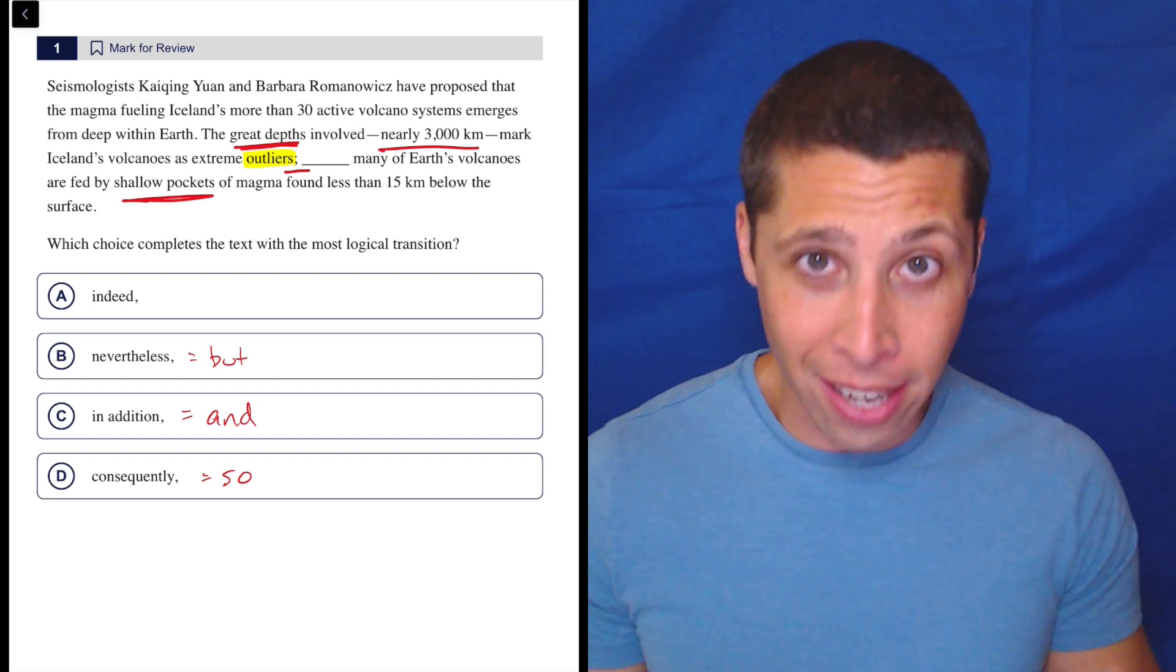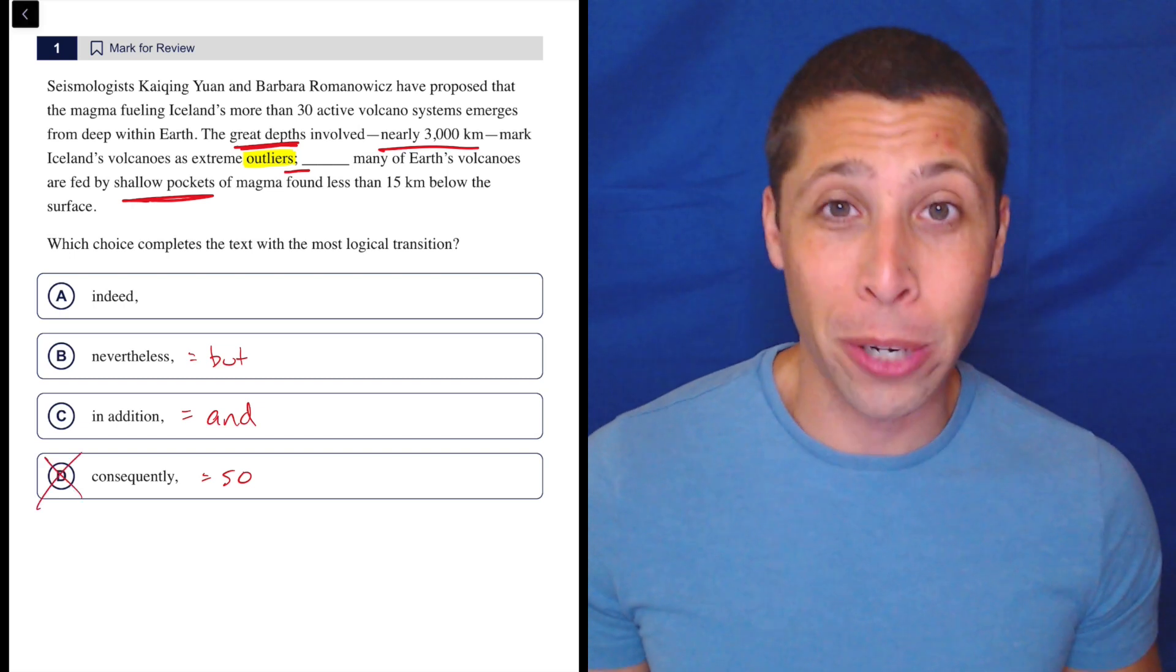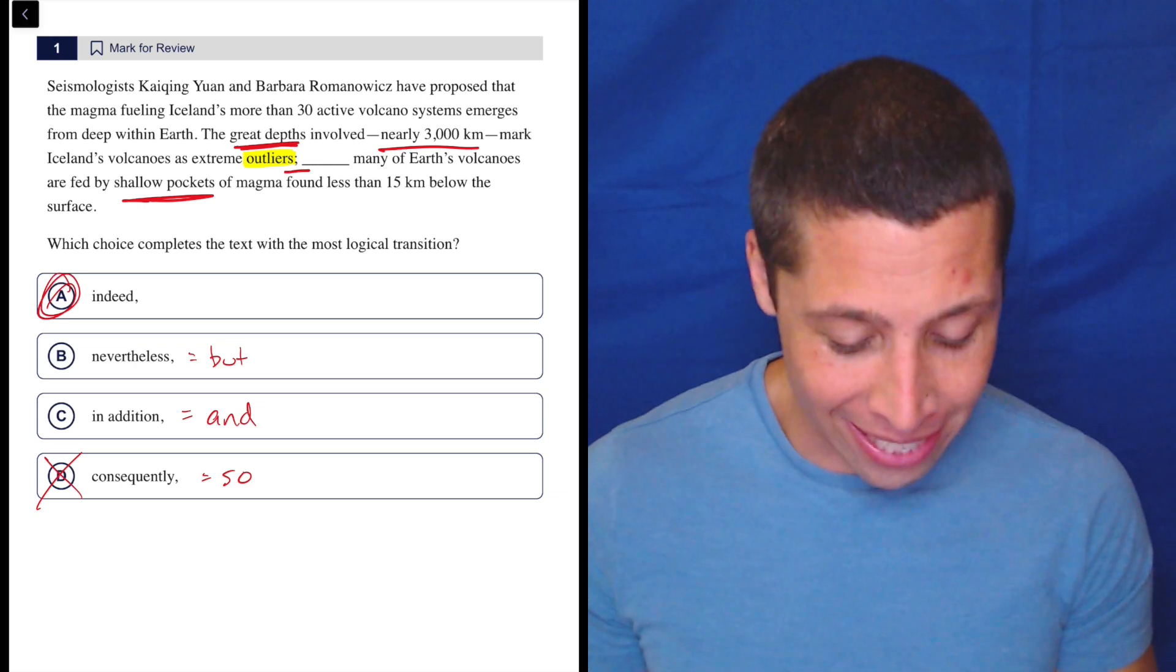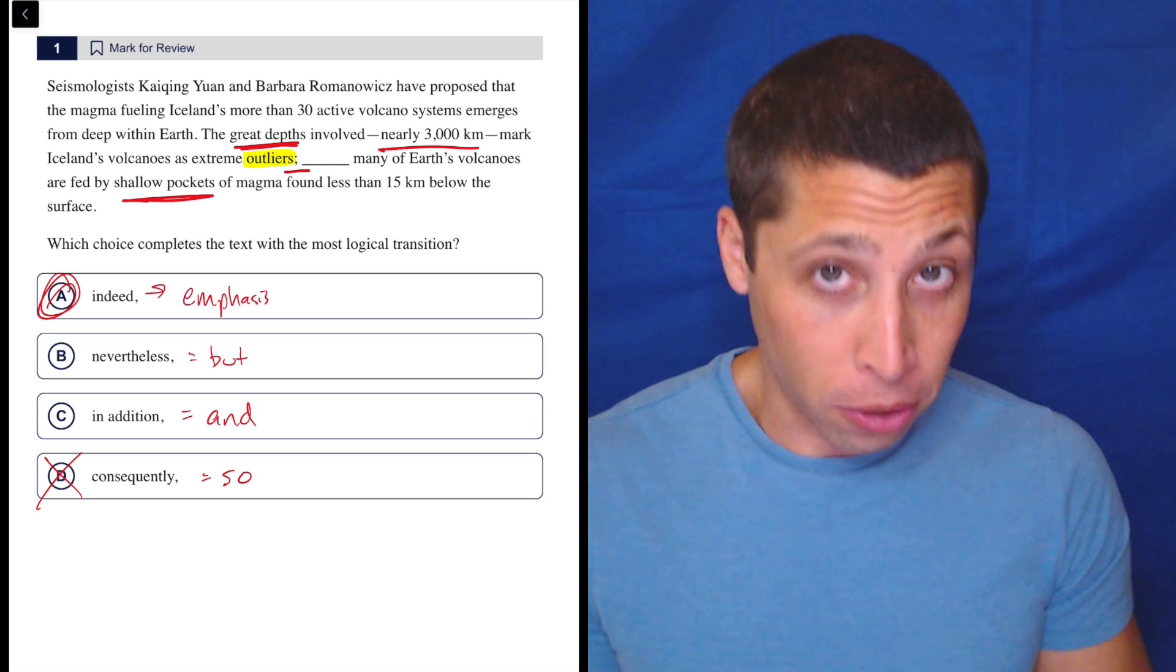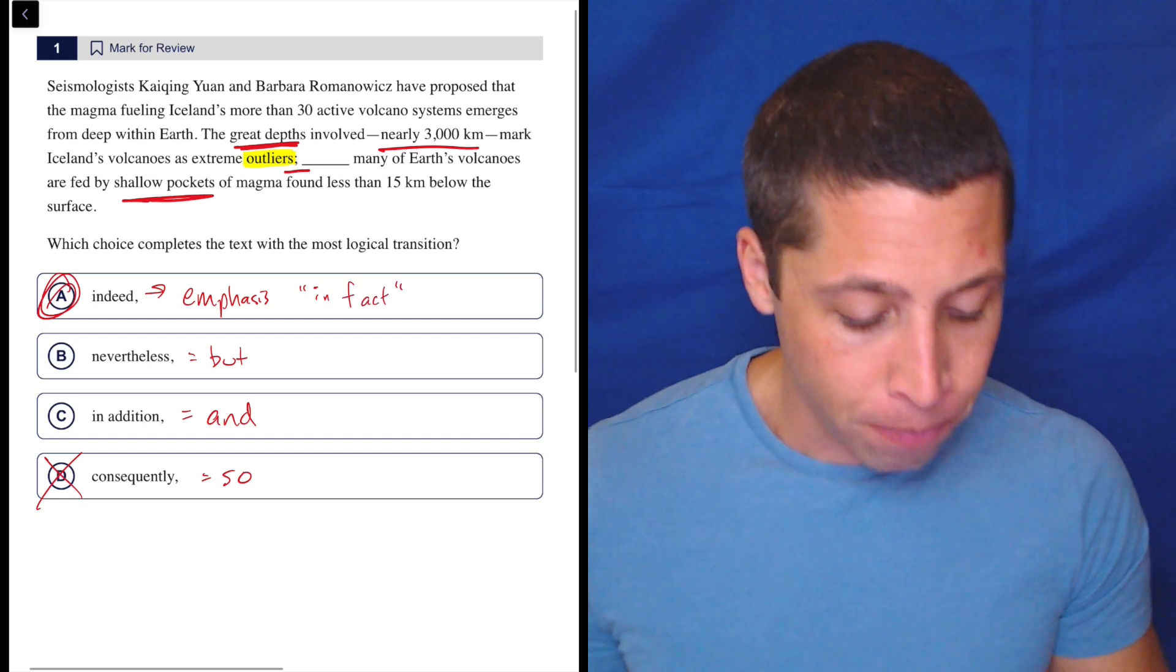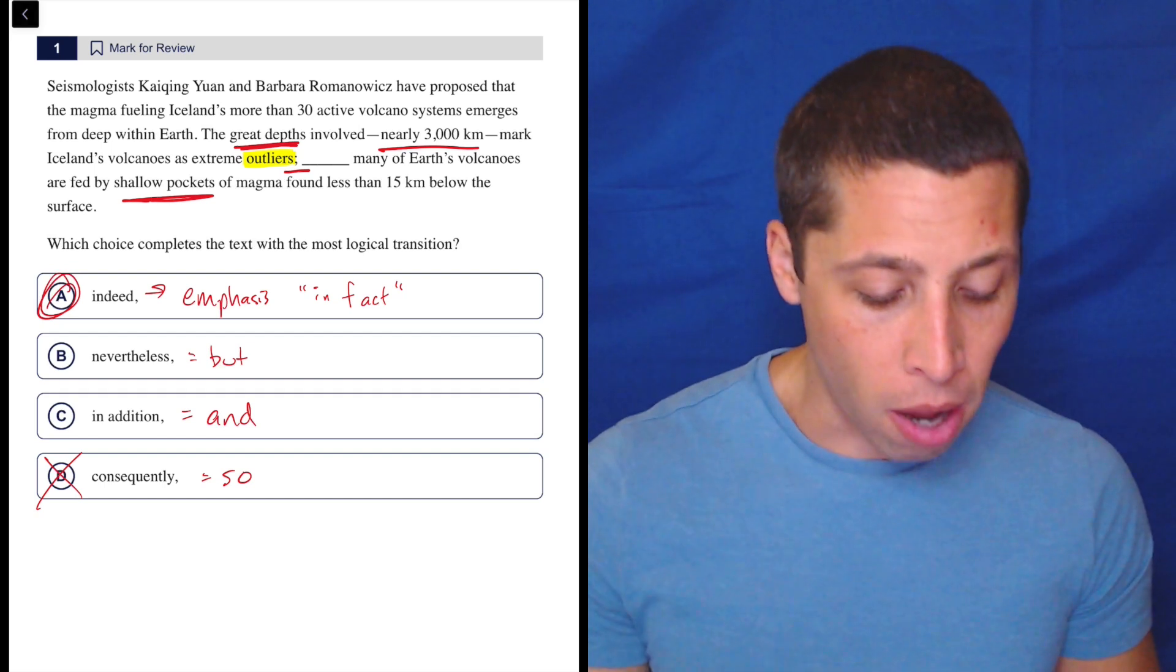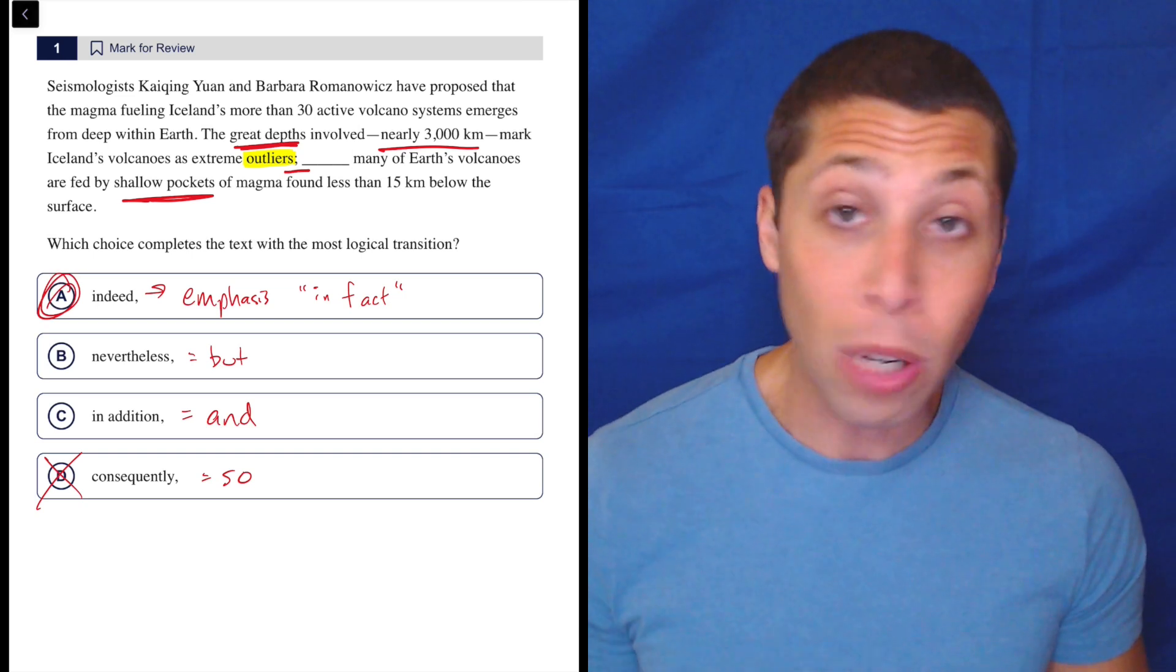So I think most of you are going to get rid of D pretty confidently, but I do think many of you are going to get this wrong because you picked B, because you're just like, oh, it's a contrast, shallow versus deep. No, this is just a very tricky question. The answer is A, indeed. And this is a word that adds emphasis. So a similar word would be, or a similar transition would be in fact. So what they're trying to do is really, like I said, emphasize this idea that this is an outlier.